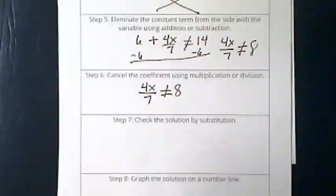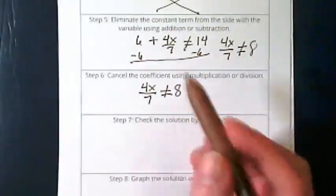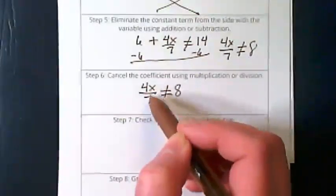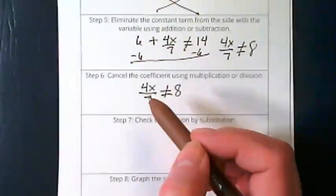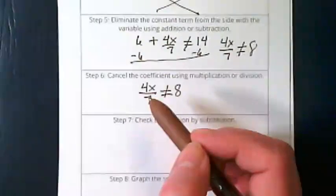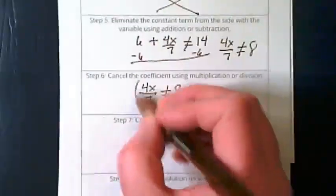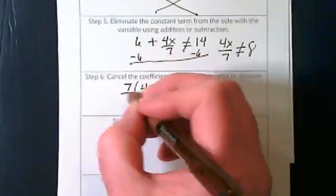This next step says cancel the coefficient using multiplication or division. Well, our coefficient this time is a fraction. It's 4 over 7. So what are we going to do with that? I see people doing something like this with their finger. We need that reciprocal, don't we? So we're going to do 7 over 4.